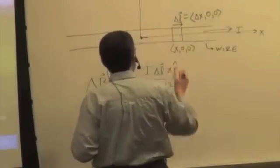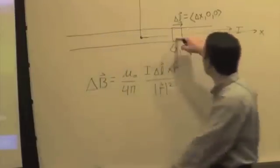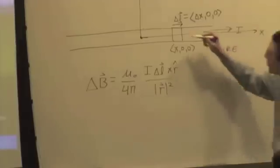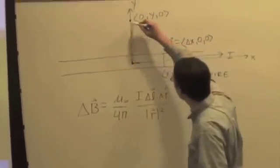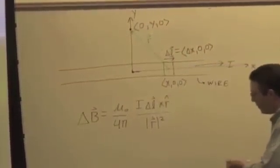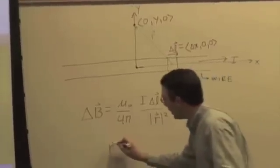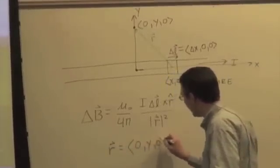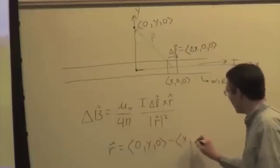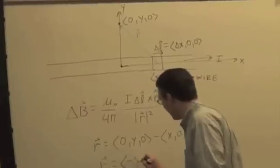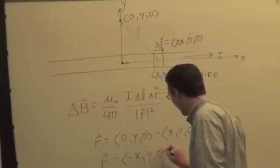Do the same thing here. So we start with a typical piece, and we find the r vector from source to observation location for that piece. So that r vector is pointing from here to here. And r is going to be final minus initial: 0, y, 0, minus x, 0, 0. So r is going to be then negative x, y, 0.